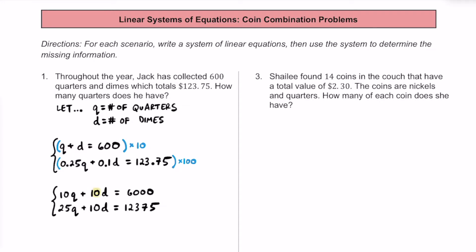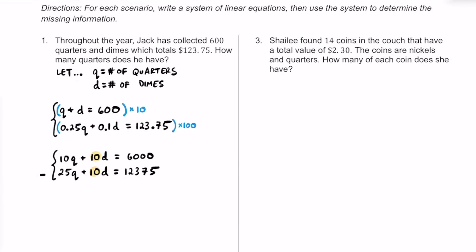By doing that, we got the D coefficients to match, so we can eliminate D by subtracting the two equations. 10Q minus 25Q gives negative 15Q. Then 10D minus 10D cancels out. On the right side, 6,000 minus 12,375 gives negative 6,375.